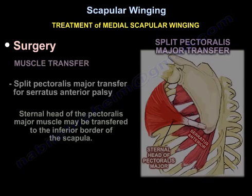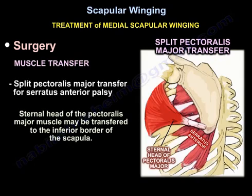In muscle transfer, the split pectoralis major transfer is used for serratus anterior palsy. The sternal head of the pectoralis major muscle may be transferred to the inferior border of the scapula.